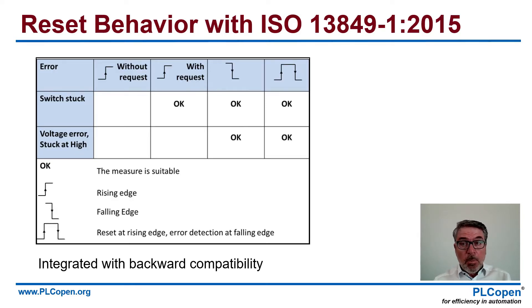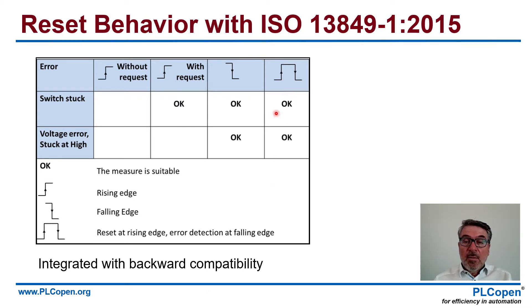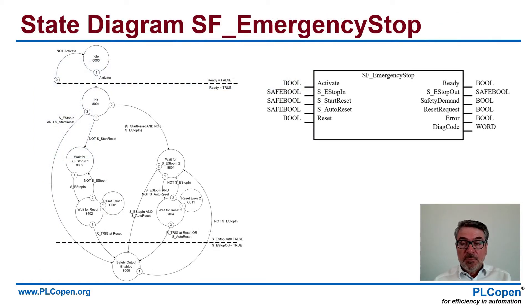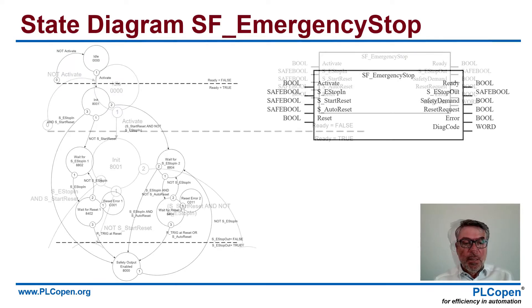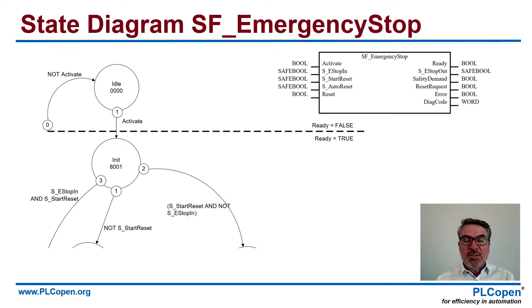This reset behavior is also compliant with ISO 13849, where you have in this case the rising edge and falling edge as the error detection part. Getting back to that, you see the function block here, with the start reset, auto reset, and reset as inputs, and of course the e-stop in. First of all, you activate the whole thing — this is what we do on top. We activate the function block and we get to state 8001.